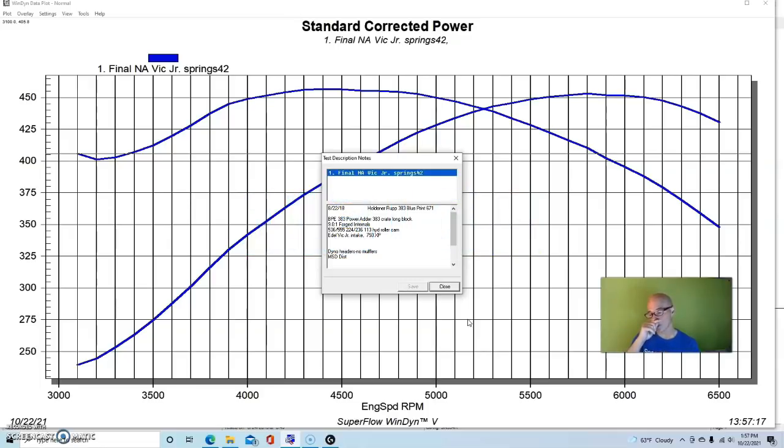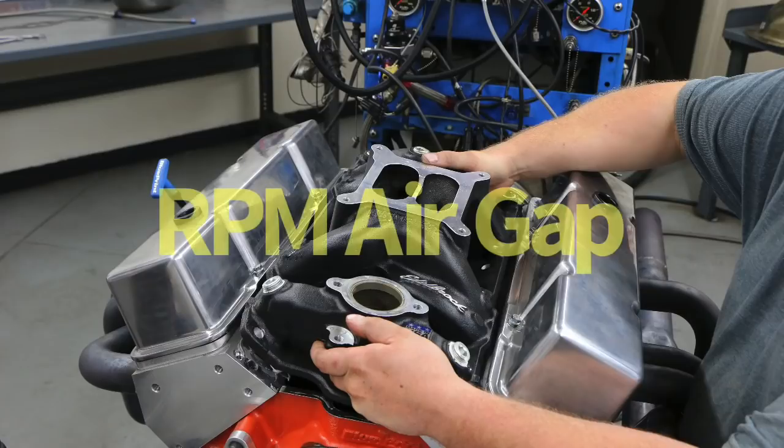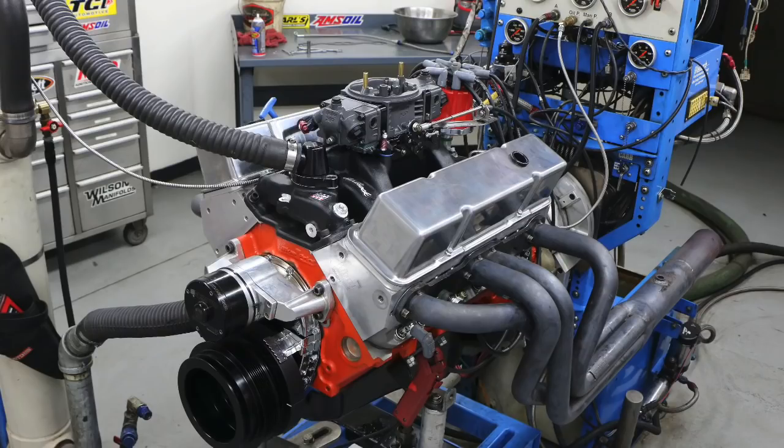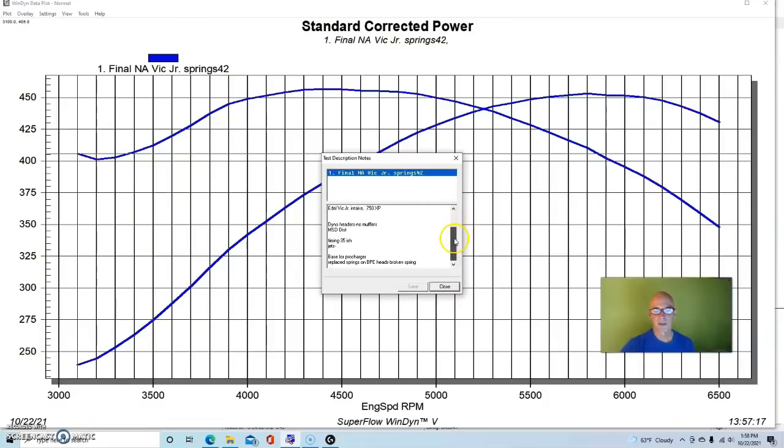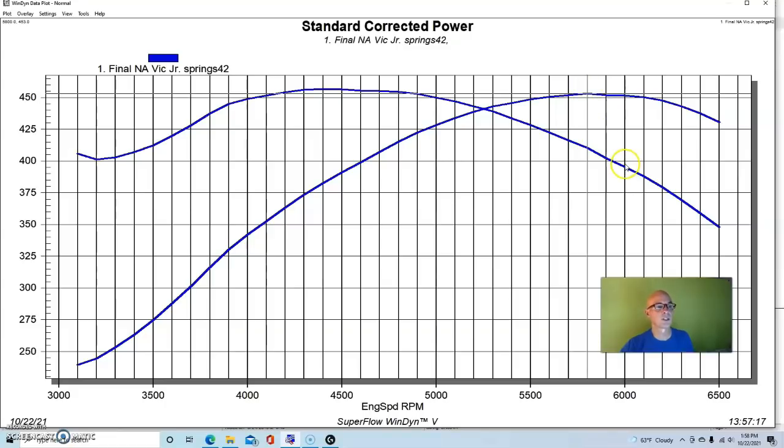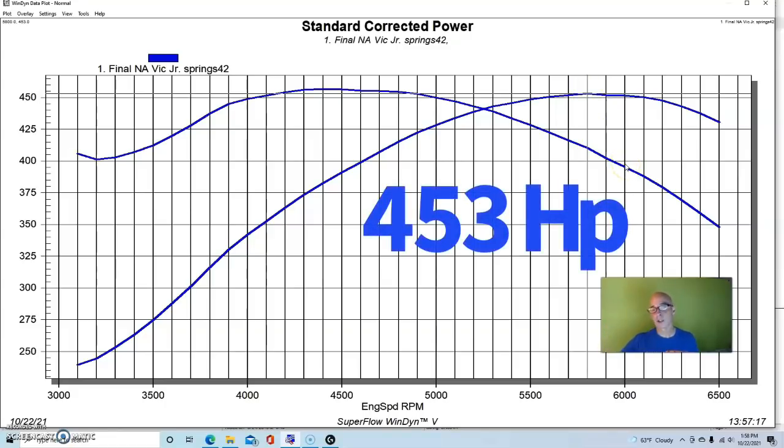We topped it for the naturally aspirated combination and also for the Pro Charger with an Edelbrock Victor Jr intake and a 750 carburetor. It had our dyno headers and MSD distributor. This thing ran best with 35 degrees of timing. Again, this is more oriented toward street performance, but it would make some fairly good power. Run in naturally aspirated trim, our 383 produced 453 horsepower and 456 foot-pounds of torque.